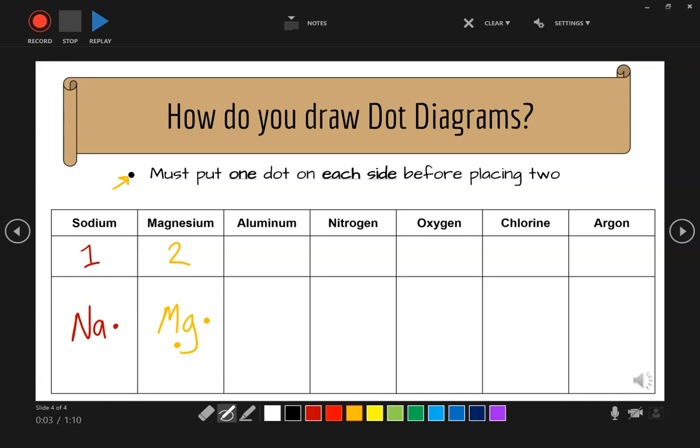Okay, it doesn't matter which side. It just has to be a different side than your first dot. The other thing to think about when you do dot diagrams is you want them to be relatively neat so they're easily readable.